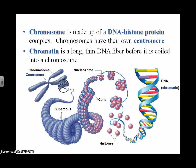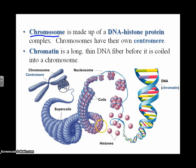Before continuing, it's important to gather a few definitions that will be used throughout the rest of this tutorial. The first is chromosome. A chromosome is made entirely of DNA and histone protein complexes. This is a chromosome seen in its characteristic X shape, and in the center of that chromosome, holding it together, is the centromere. Every chromosome has its own centromere.